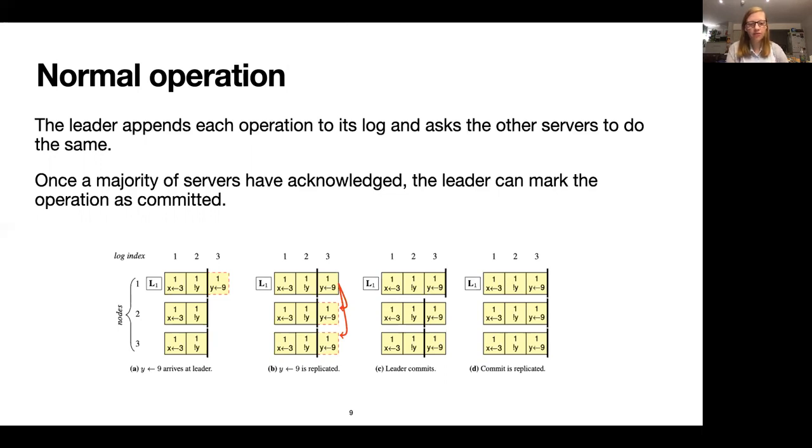Every server keeps a record of their current term and the term is monotonically increasing over time. If you're more familiar with the Paxos literature, this is also known as a sequence number or a ballot number or an epoch.